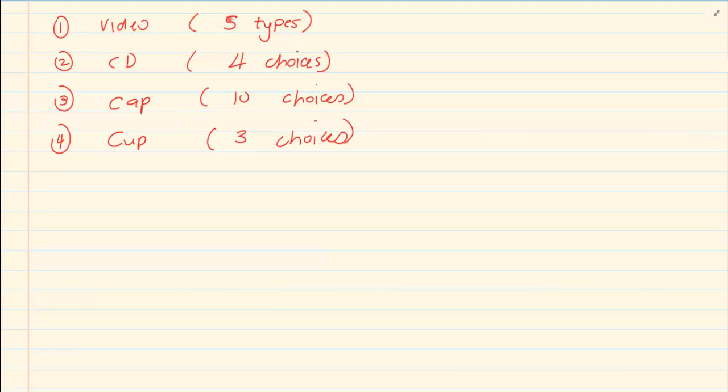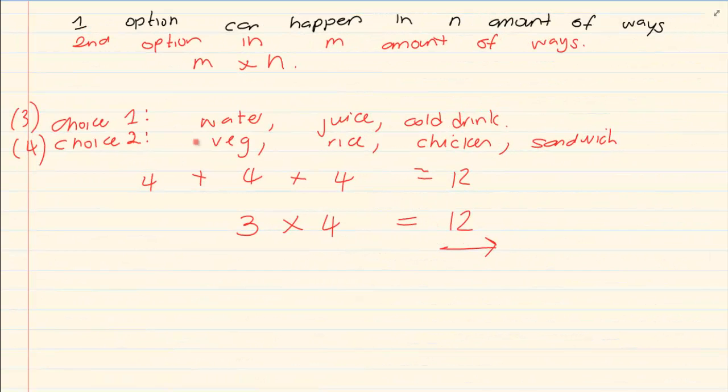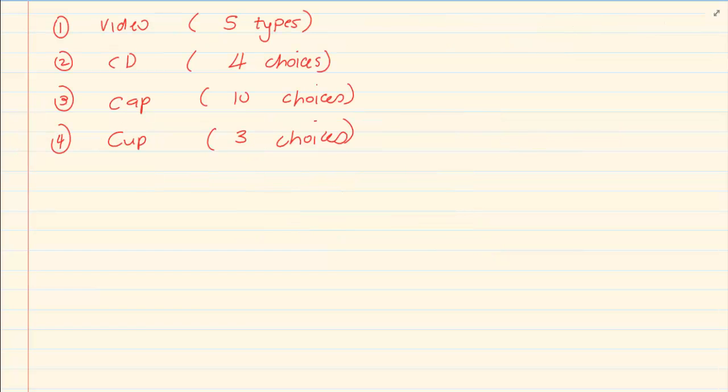Now you can't do it as you did with the first one. You can't go and say water times all four, juice times all four. Because once you do that, how do you go to the next level and the next level? So the perfect way to do it is to say five times four times ten times three.